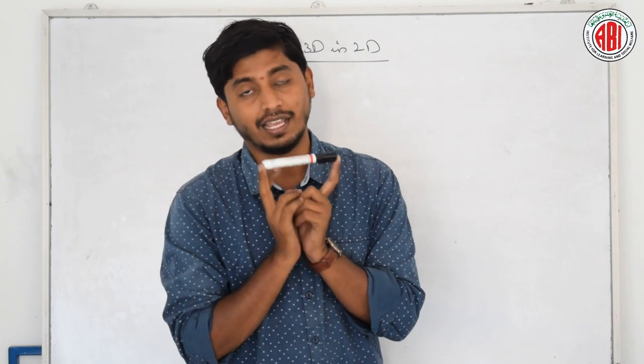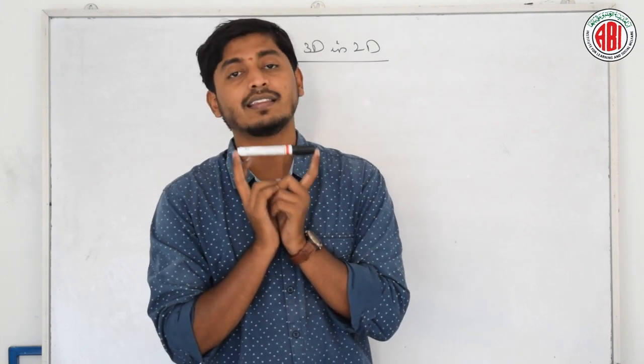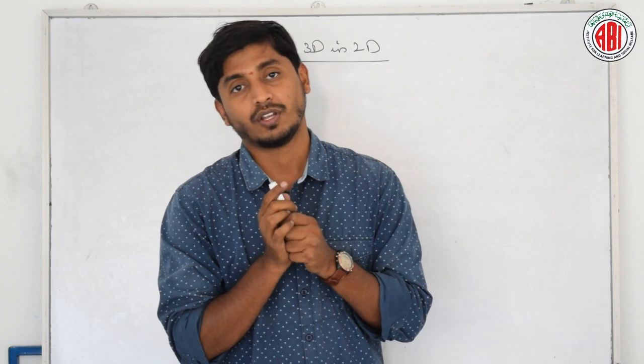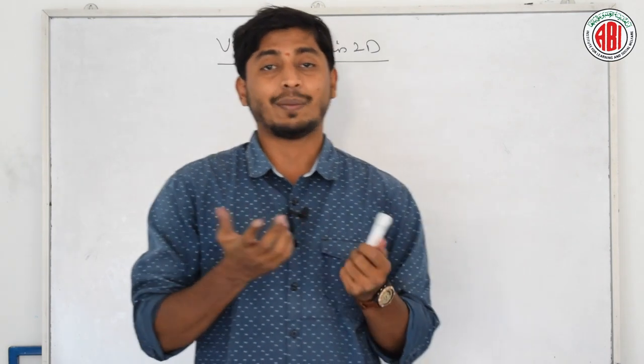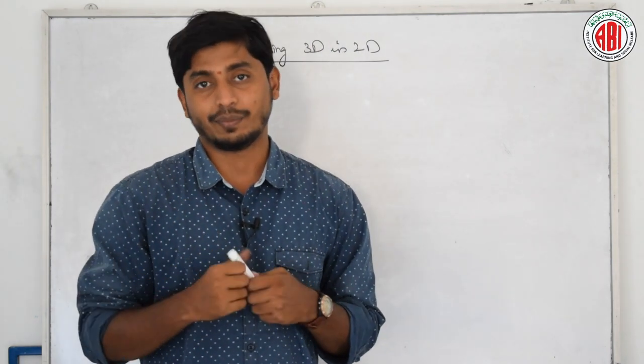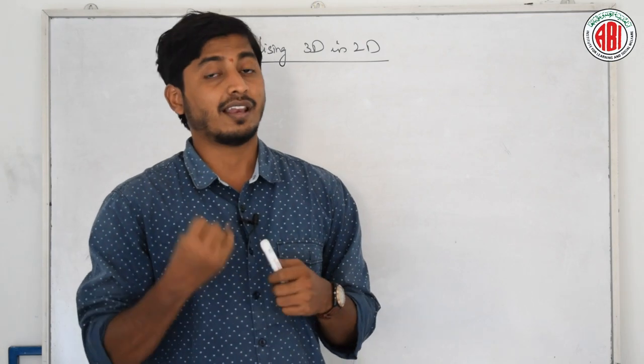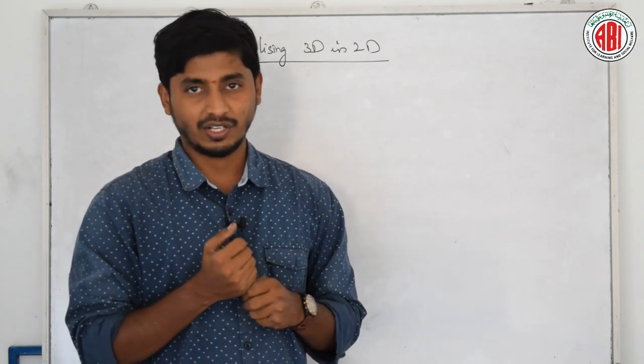In theoretically, this is one dimensional. Two dimensional is a paper. It has length and breadth. Three dimensional has length, breadth and height.